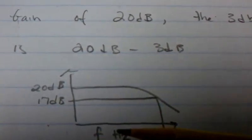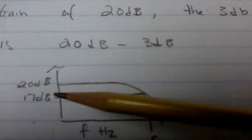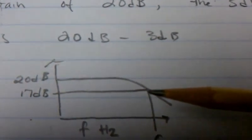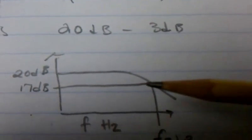For example, if we had a low pass filter with a gain of 20dB, the 3dB point would be 17dB.